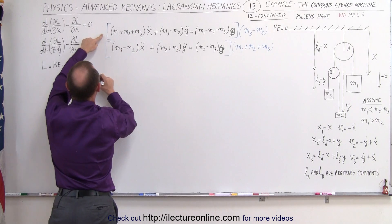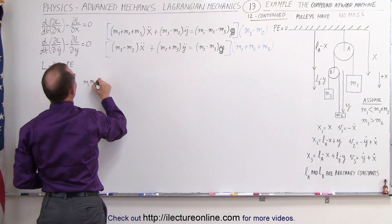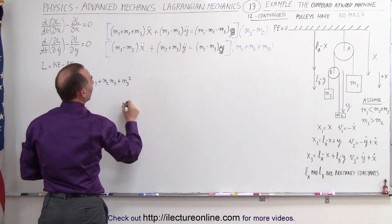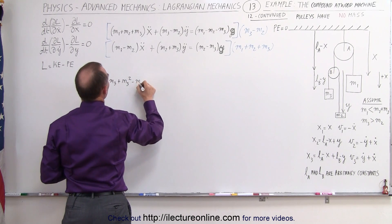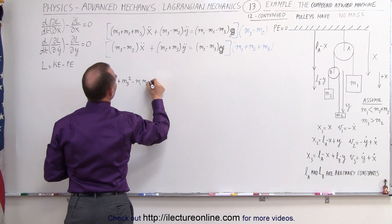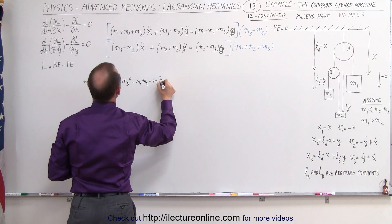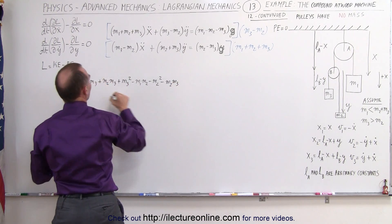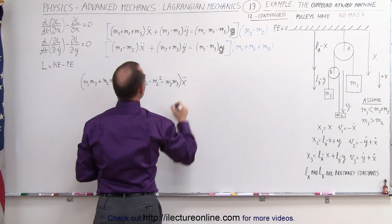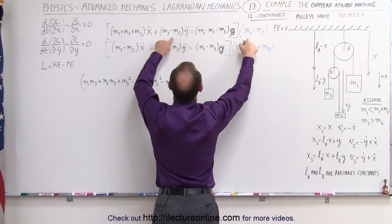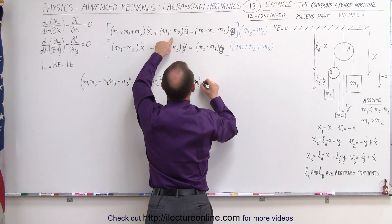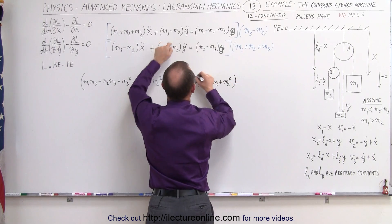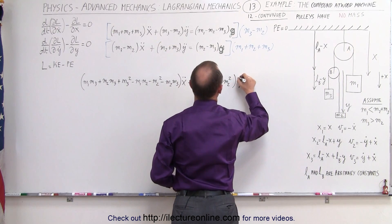On the top equation, multiplying through, we get m1m3 plus m2m3 plus m3 squared, minus m1m2 minus m2 squared, and minus m2m3, all multiplied times x double dot. Then we get plus m3 squared minus m2m3 plus m2 squared, multiplied times y double dot.